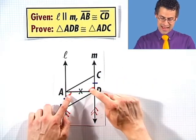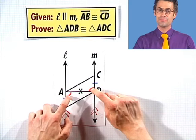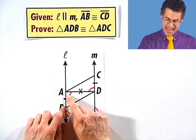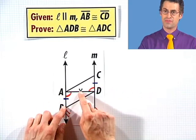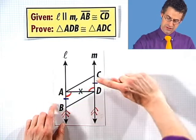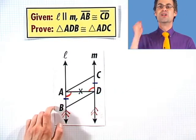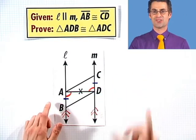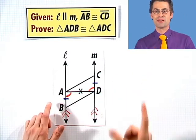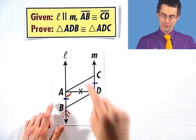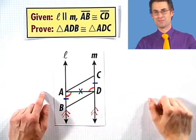So these two angles are congruent. And what do I have? I have side, angle, side of this triangle congruent to side, angle, side of this triangle. These two triangles are congruent by side-angle-side. We've proved the theorem. Congratulations — isn't proving theorems great?